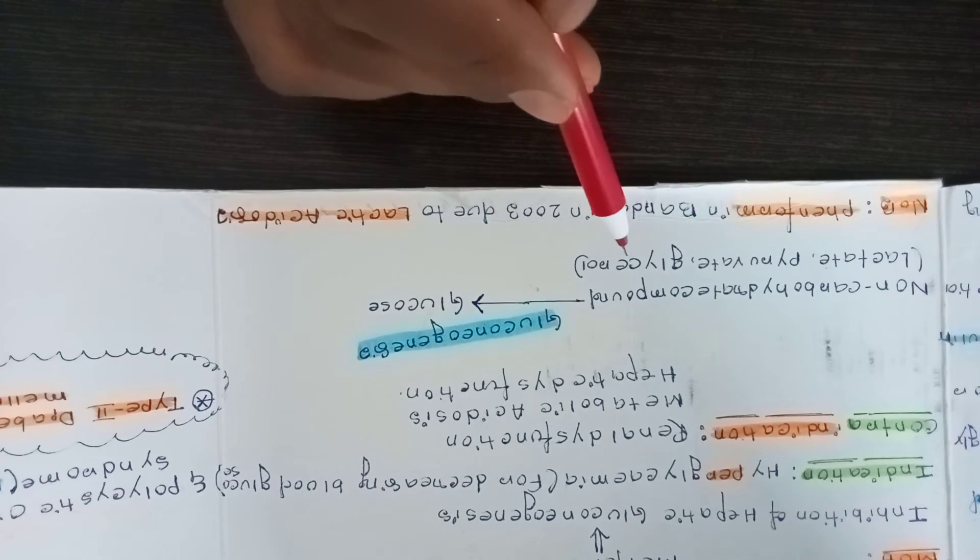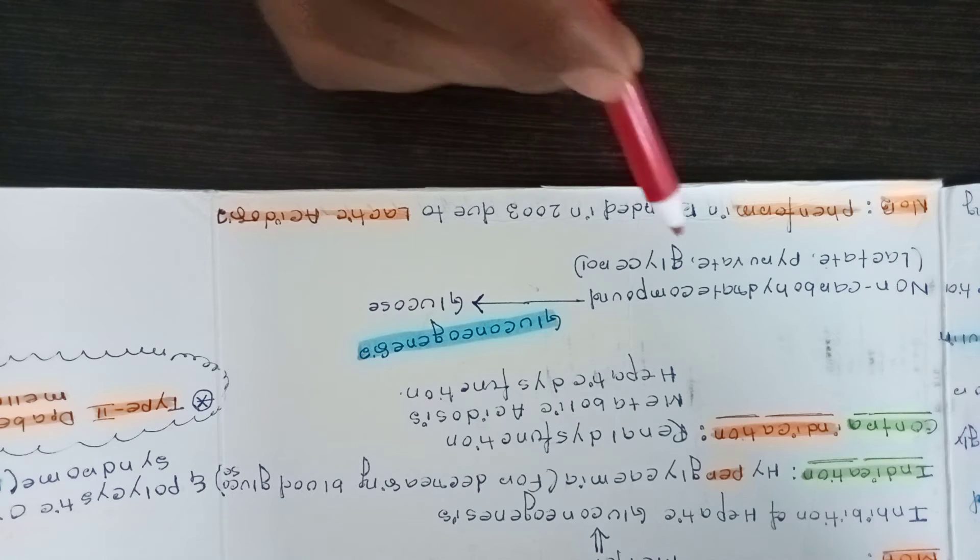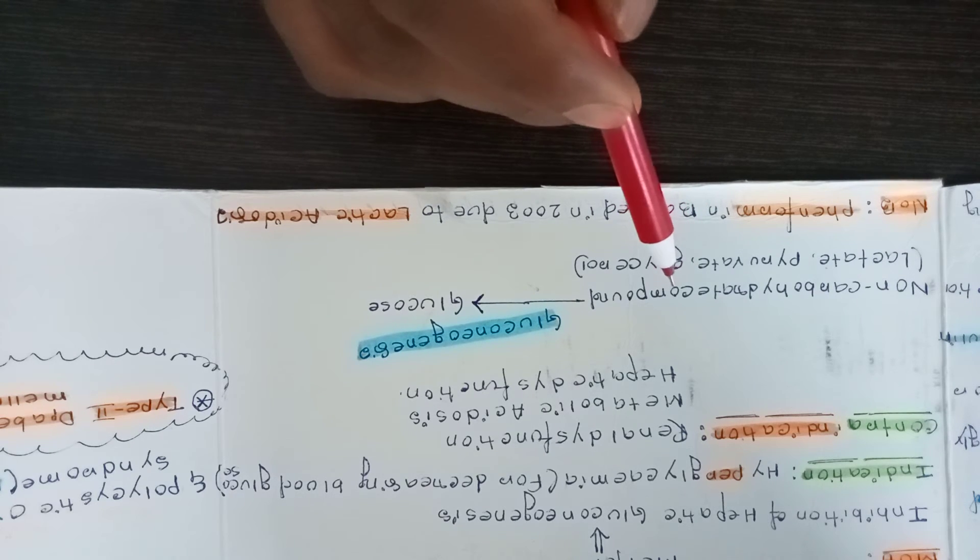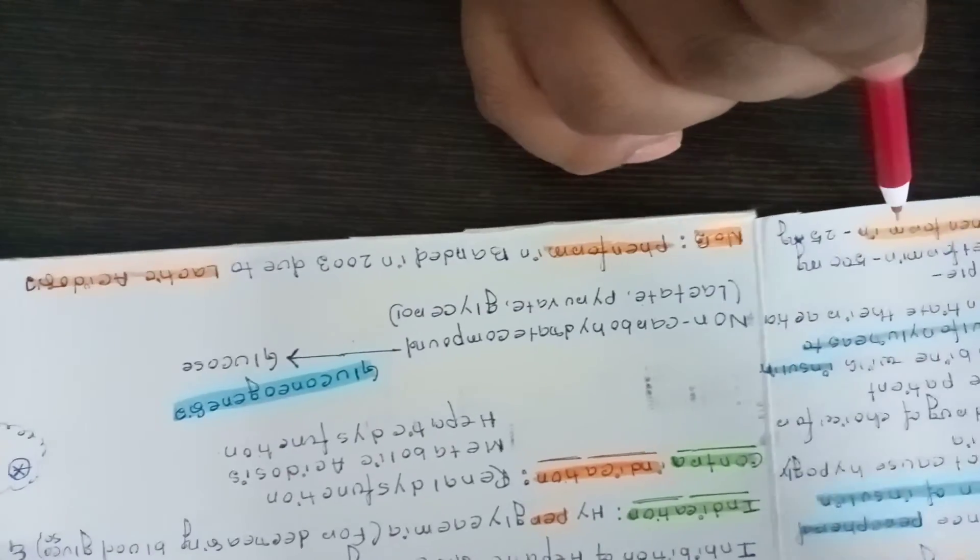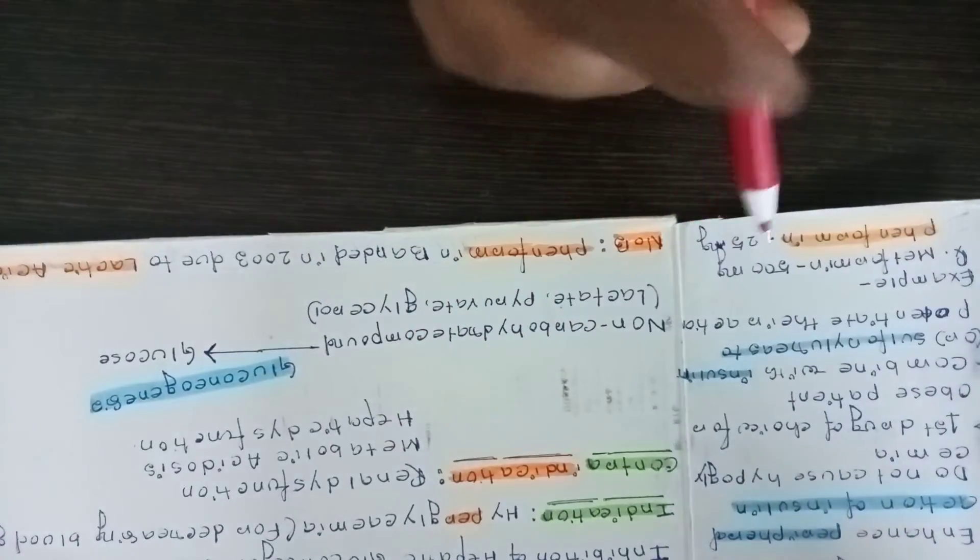One more important thing we should know is biguanide is one class of drug. Examples are metformin and phenformin.